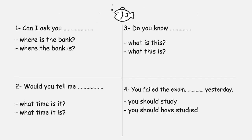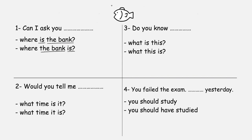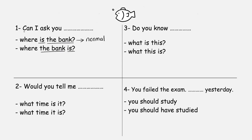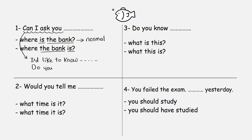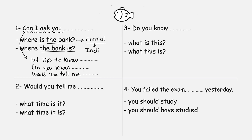Can I ask you where's the bank, or where the bank is? We normally say 'where is the bank' — that is a normal question. But when we add something before the question, like 'can I ask you,' 'I'd like to know,' 'do you know,' or 'would you tell me,' we change it into an indirect question. We say: 'Can I ask you where the bank is.'